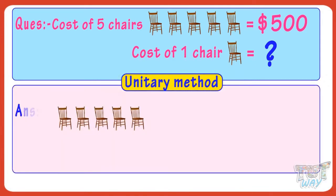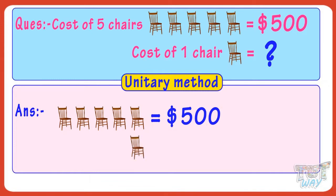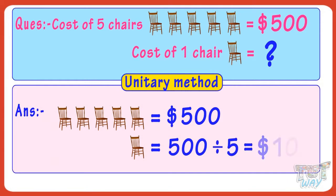If the cost of five chairs is $500, then the cost of one chair is $500 divided by 5. So the cost of one chair is $100.